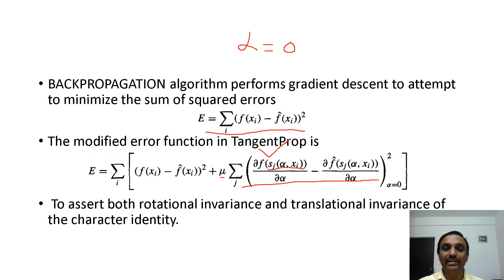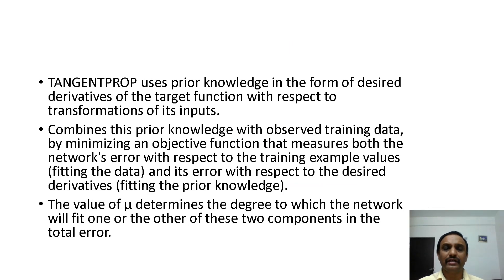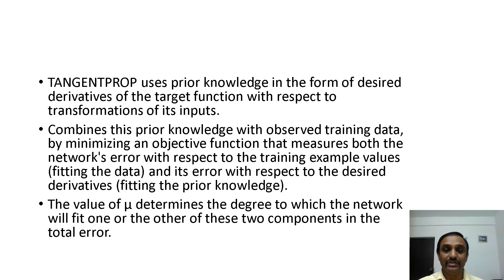The mu value is a constant. This tangent prop algorithm uses prior knowledge in the form of desired derivatives of the target function with respect to transformations of inputs. It measures the network's error with respect to the training example values, fitting the data, and measures its error with respect to the desired derivatives, fitting the prior knowledge. The value of mu determines the degree to which the network will fit one or the other of these two components in the error.